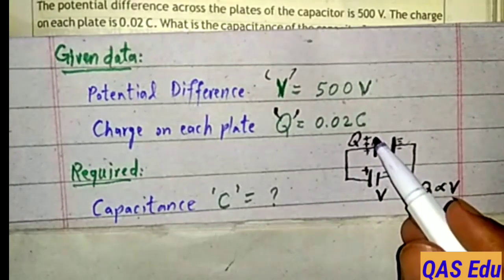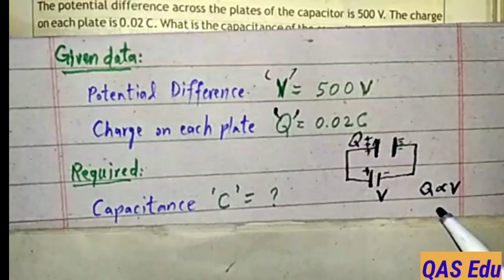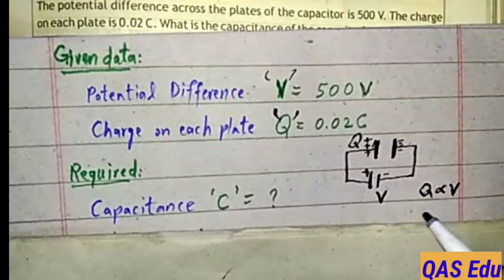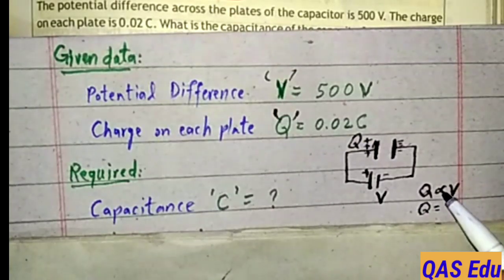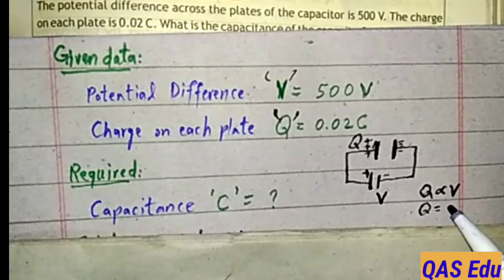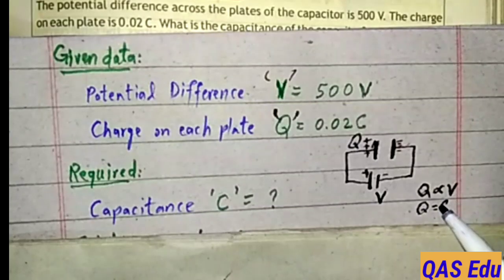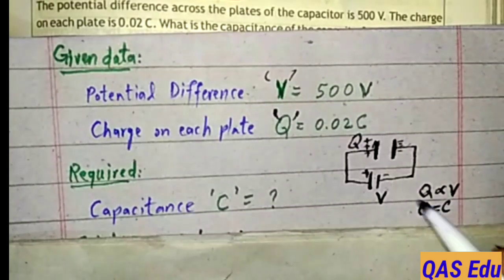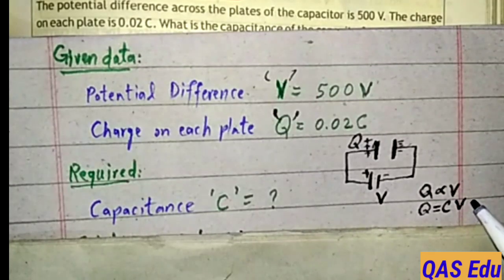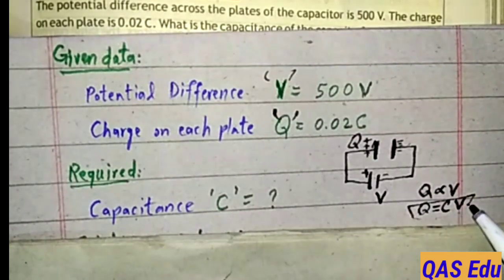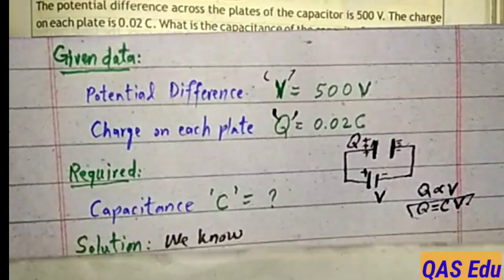To convert this proportion to an equation we add a constant. That constant is capacitance of the capacitor which does not change. So the equation for capacitor is Q is equal to CV.